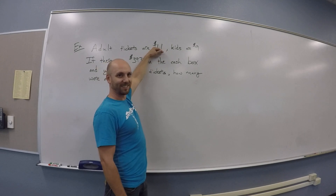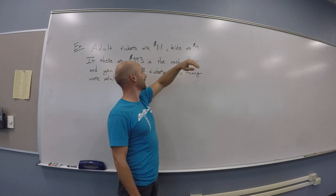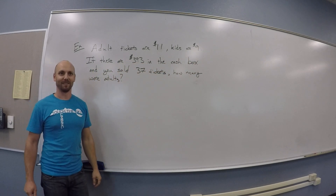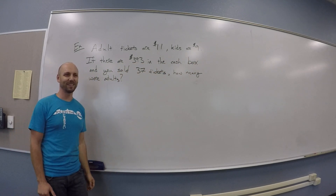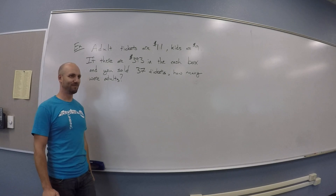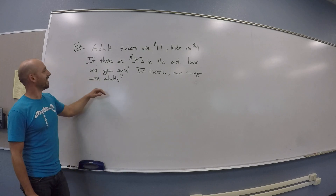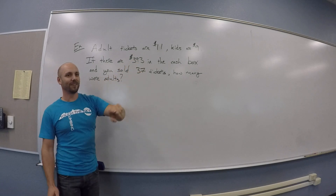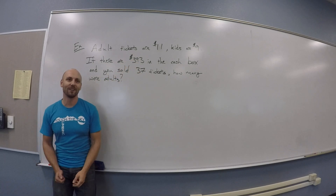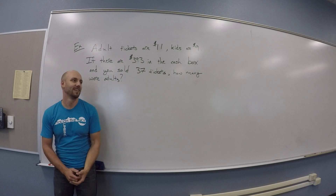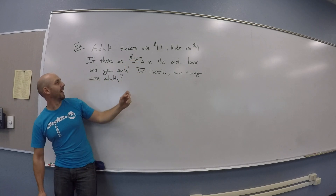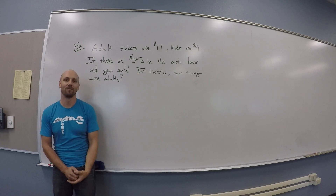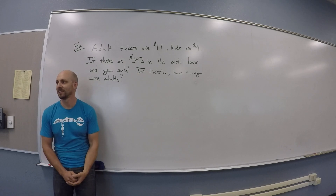You have adults' tickets at $11 and kids' tickets at $9. How did $11 get to a 4-H ball game? I don't know — inflation, man. At the end of the night, you have $393 in the cash box, and you know that you sold 37 tickets. You want to find out how many of these were adult tickets.